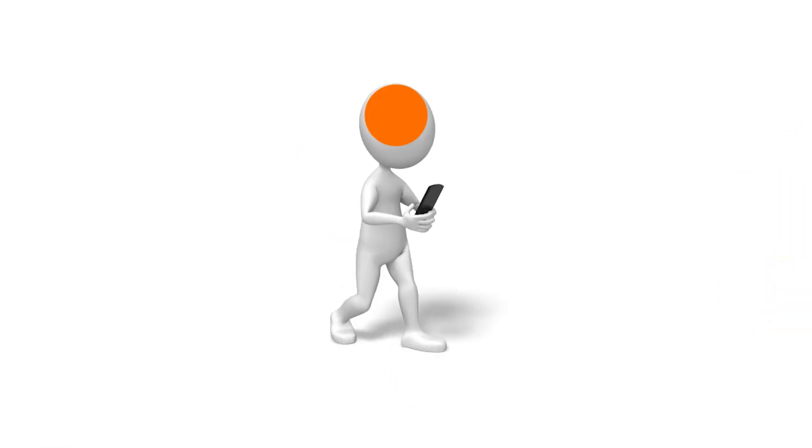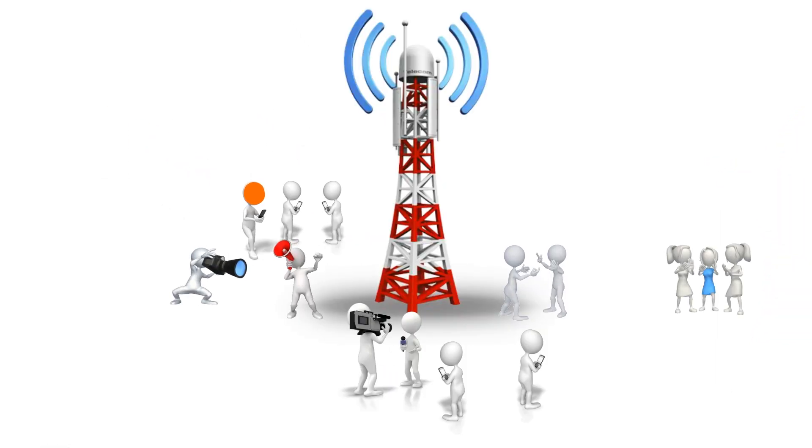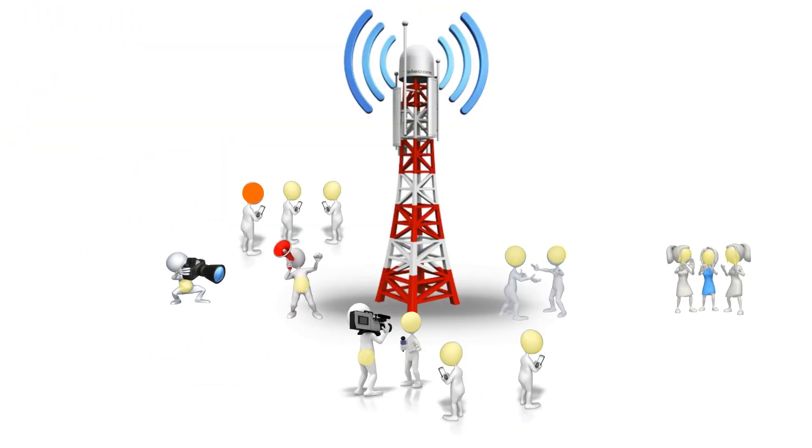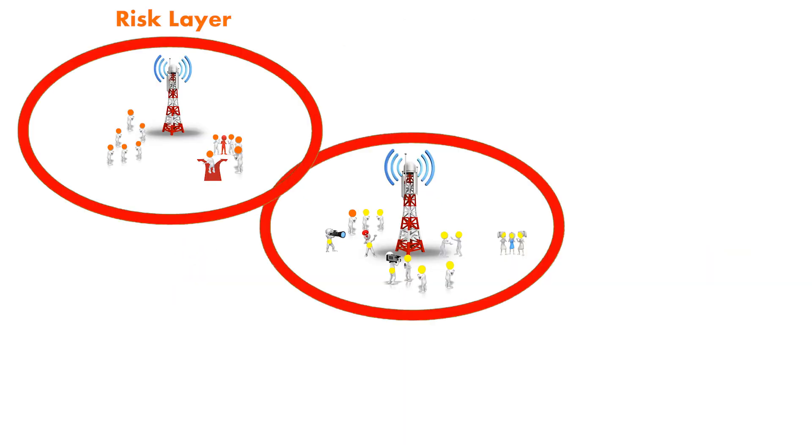While these suspected persons visited other regions under different cell towers, other persons were also present at the same time in those locations. There was a chance to spread the infection like a chain. They are highlighted in yellow and denoted as assumed persons. This layer is called the observation layer.